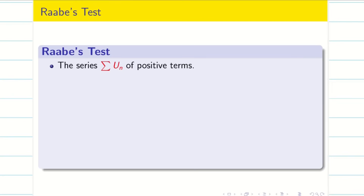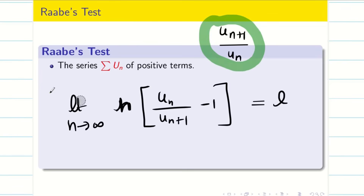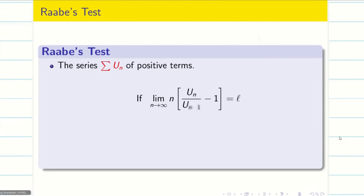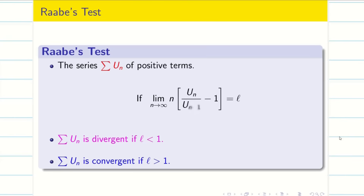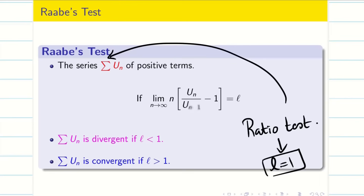Summation un is the positive term series. What Raabe did: in ratio test we have un+1 by un, he took the reciprocal of it, subtracted 1, then multiplied with n. Now, limit n tends to infinity gives a finite value. In Raabe's test we compute un by un+1. If l is less than 1, summation un diverges. If l is greater than 1, summation un converges — the opposite of ratio test. We use Raabe's test when ratio test fails, i.e., when l equals 1. So don't apply Raabe's test directly.